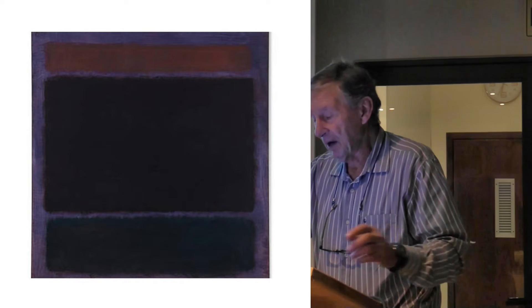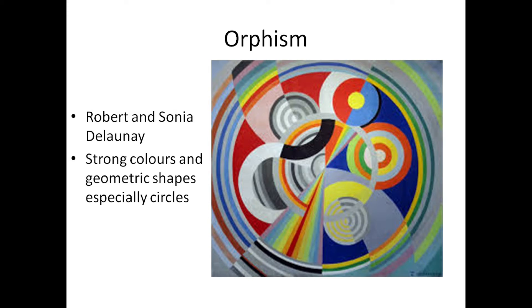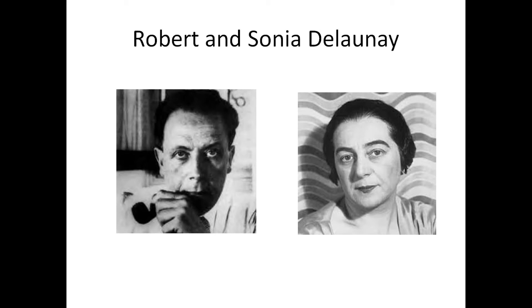So we see this sort of thing. Orphism was Robert and Sonia Delaunay — instead of squiggles, you had circles. They were French, and they used strong colours, geometric shapes, but especially circles. They loved to do circles. Here are Robert and Sonia Delaunay — that was quite fascinating.